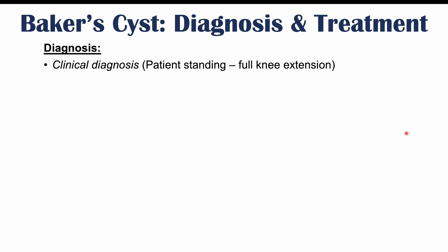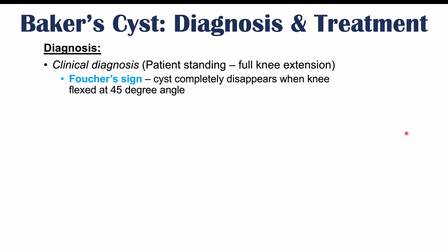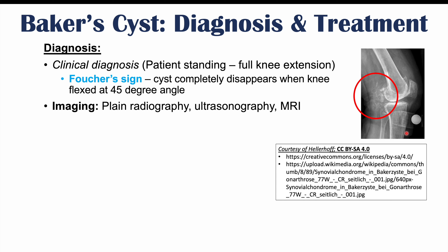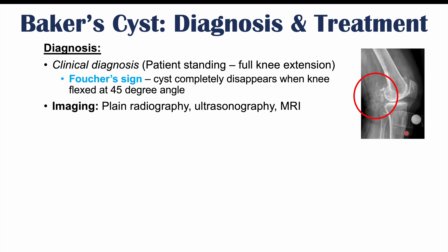Diagnosis is often a clinical diagnosis. The patient should be standing with the knee fully extended so you can see the bulge or mass behind the knee — with the knee flexed, the mass may not be visible. There is a clinical sign known as Foucher's sign, where the cyst completely disappears when the knee is flexed to a 45-degree angle. If you can see the mass with the knee extended and it disappears when the knee is flexed to 45 degrees, that is Foucher's sign.